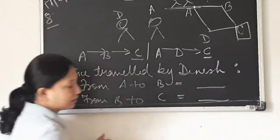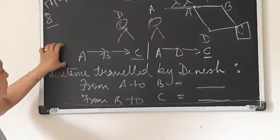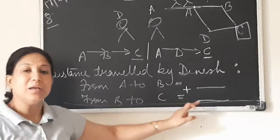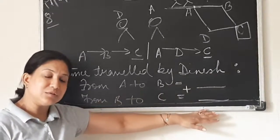Then you will draw a line. Why? Because from this, you will find out the total distance travelled by Dinesh. Add the values. Got it?